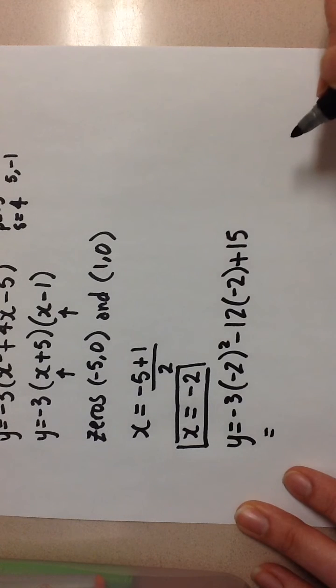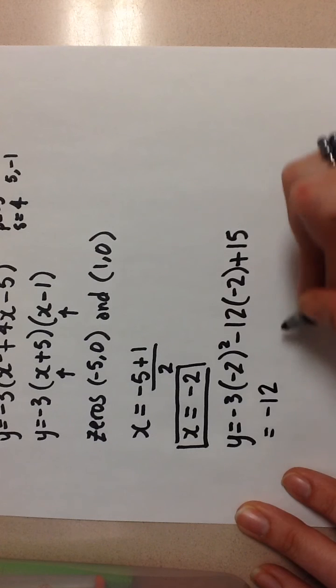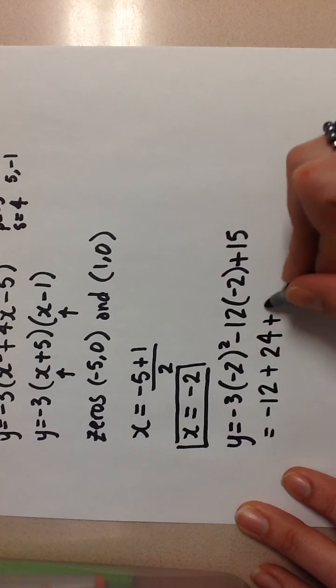And here I'm going to get negative 12 plus 24 plus 15.